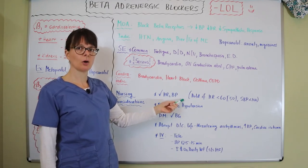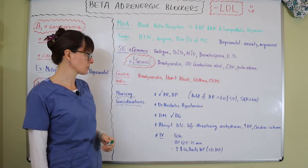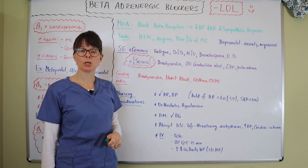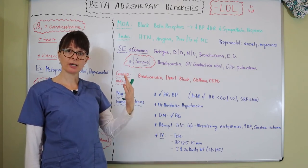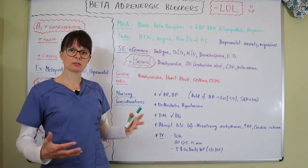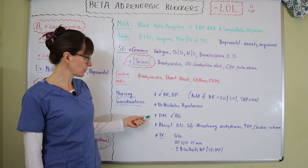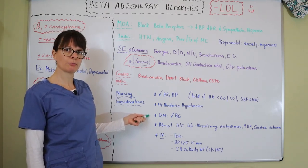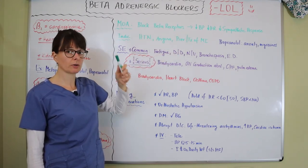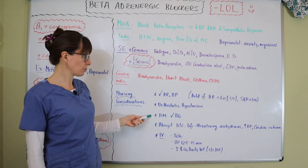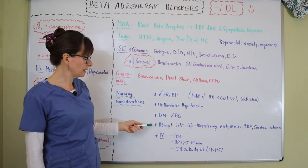Beta blockers may cause orthostatic hypotension, so patients should be instructed to rise slowly from lying to sitting to standing, allowing enough time for blood pressure to regulate. For patients with diabetes, beta blockers can lead to hypoglycemia due to their effect on the sympathetic response and on cortisol production, so blood glucose levels should be monitored closely.